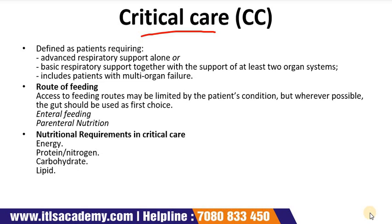Critical care is defined as patients requiring advanced respiratory support, or basic respiratory support together with the support of at least two organ systems, including patients with multi-organ failure. The aim of nutritional support in critical care patients is to minimize nutritional losses and provide basic nutrient requirements to sustain life. Repletion of pre-existing under-nutrition during critical care is unlikely to be achieved and should not be a goal, due to increased risk associated with overfeeding.